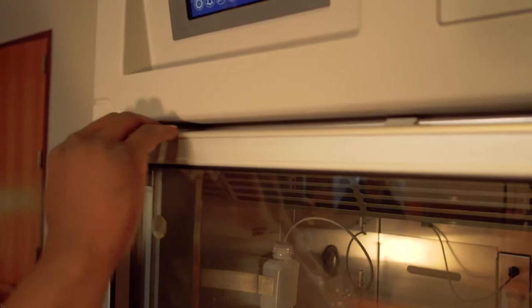If the shelf is crooked, you may need to remove and readjust the position of the shelf clip. Close the refrigerator door once all shelves have been installed.